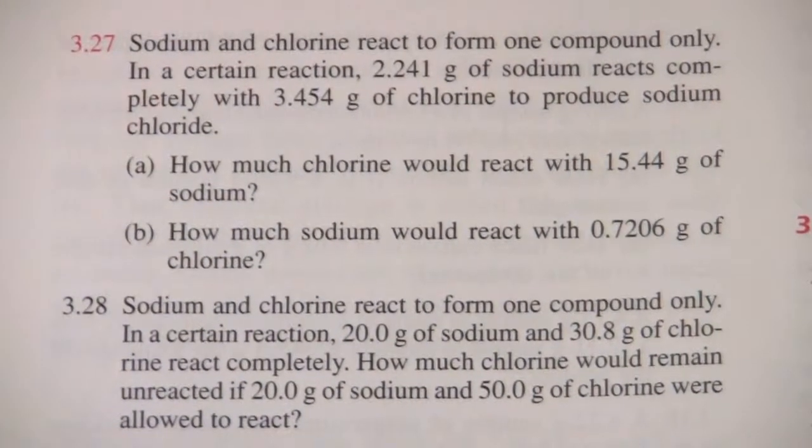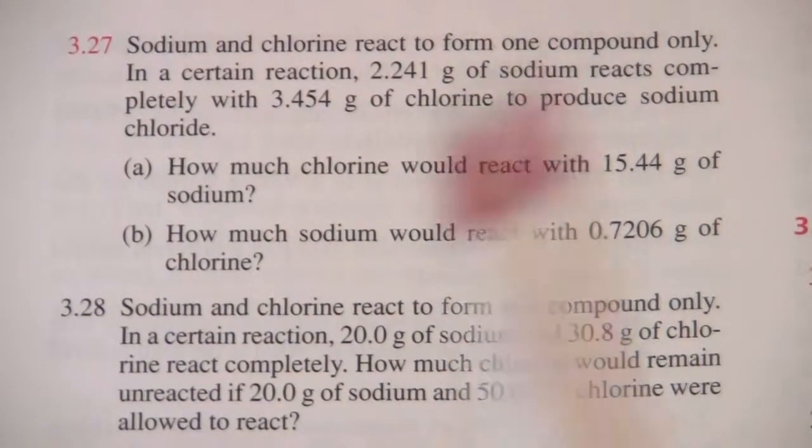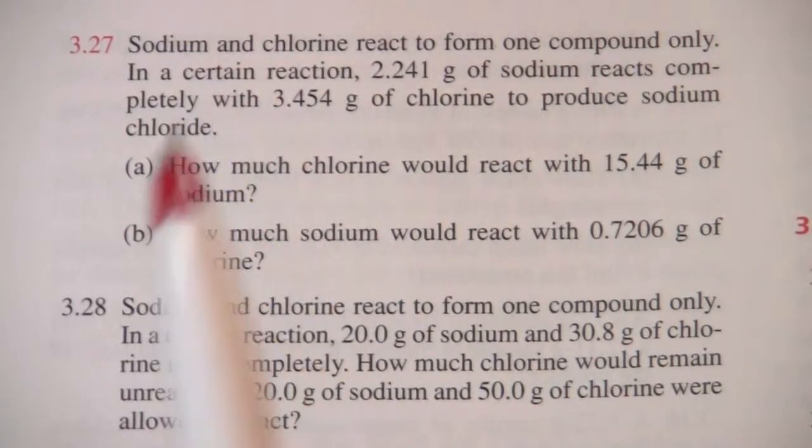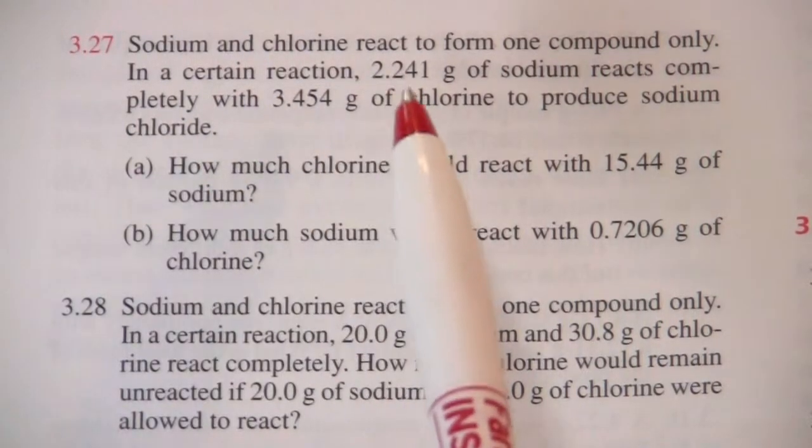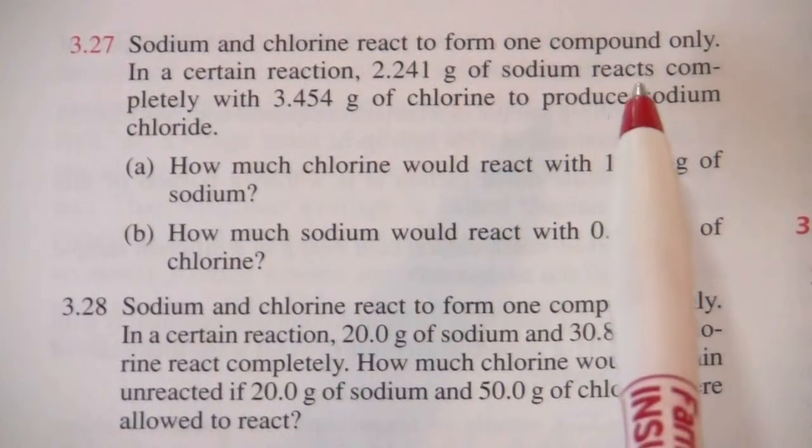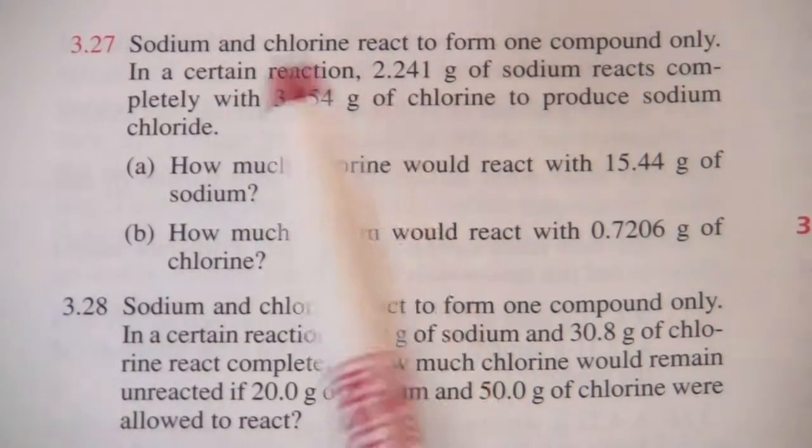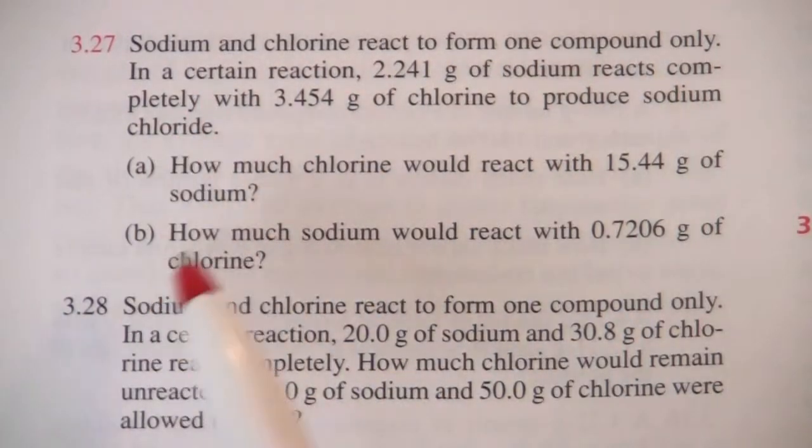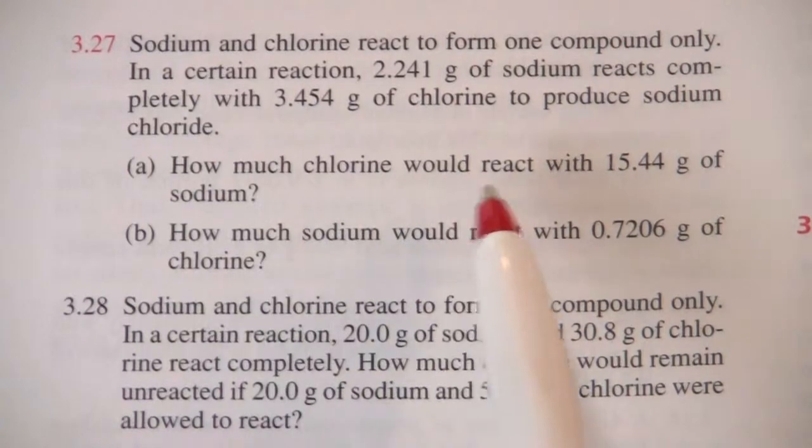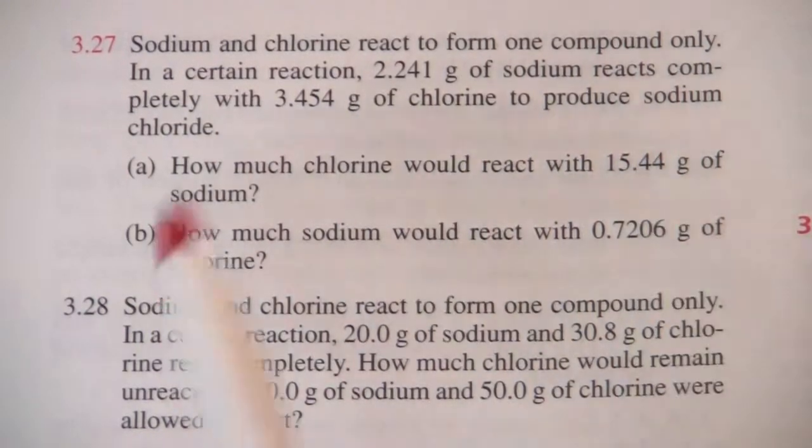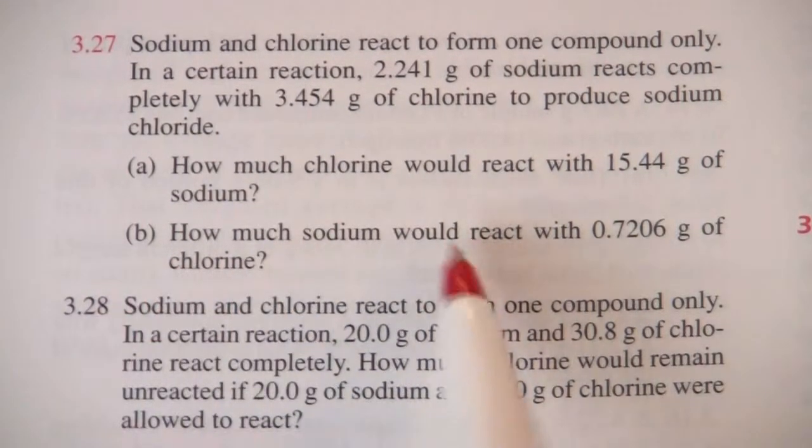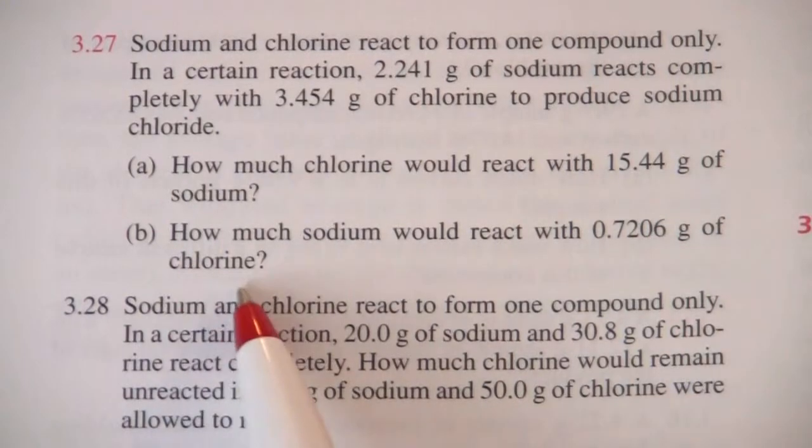All right, this problem says that sodium and chlorine react to form one compound. In a certain reaction, this many grams of sodium reacts completely with this many grams of chlorine to produce sodium chloride. So how much chlorine would react with this much sodium? And how much sodium would react with this much chlorine?